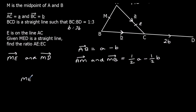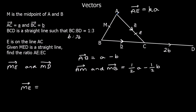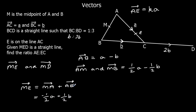Let's work out M to E. Going M to A then A to E: M to A is the reverse of A to M, so it's minus half a plus half b. Then A to E is Ka, since we don't know that fraction yet — that's what we're working out. So M to E equals (K minus one half)a plus half b.